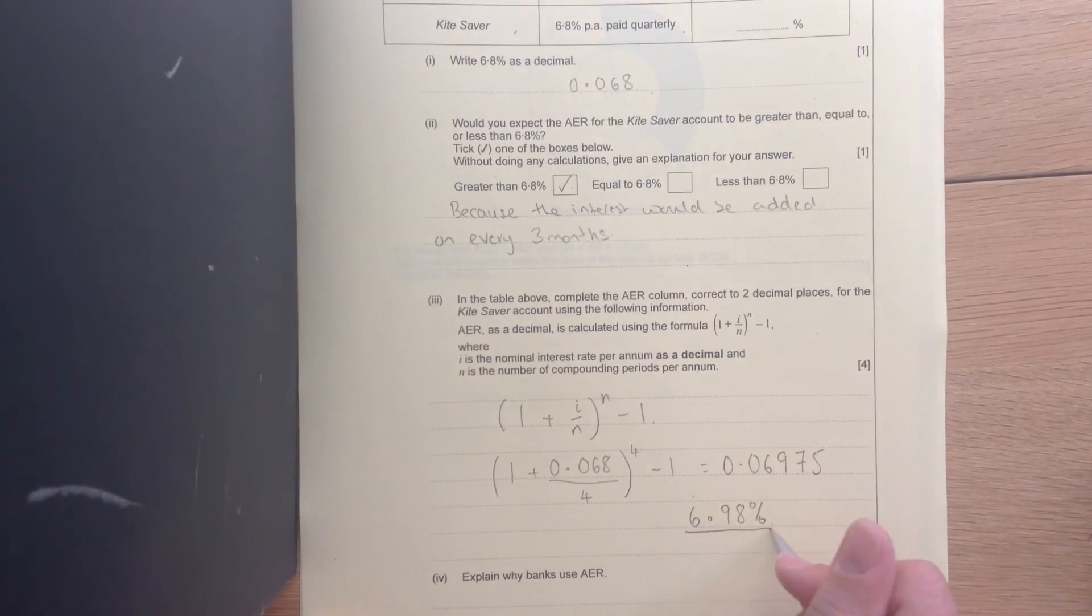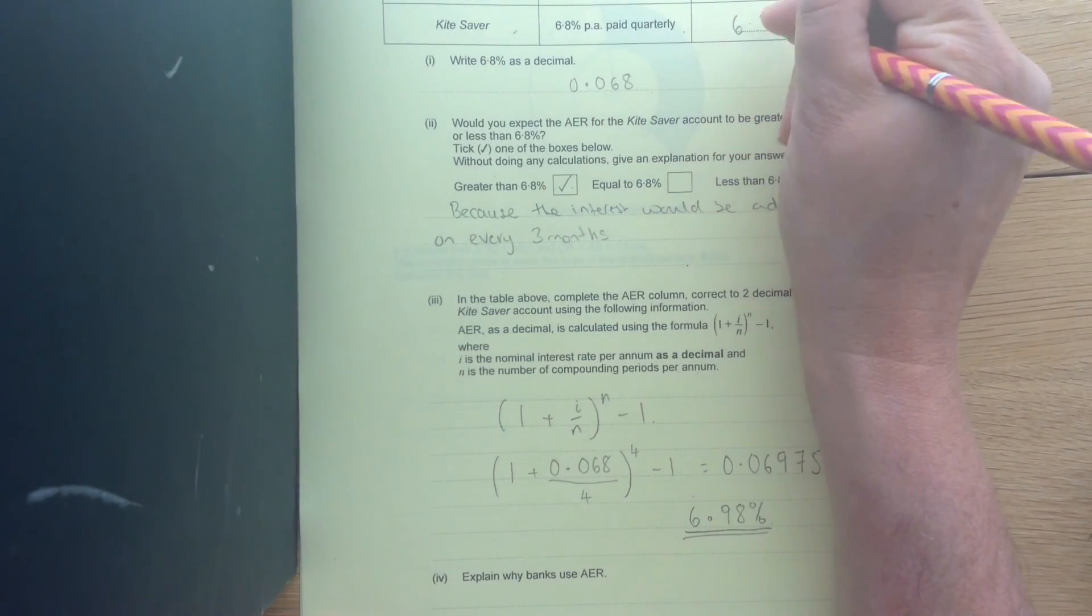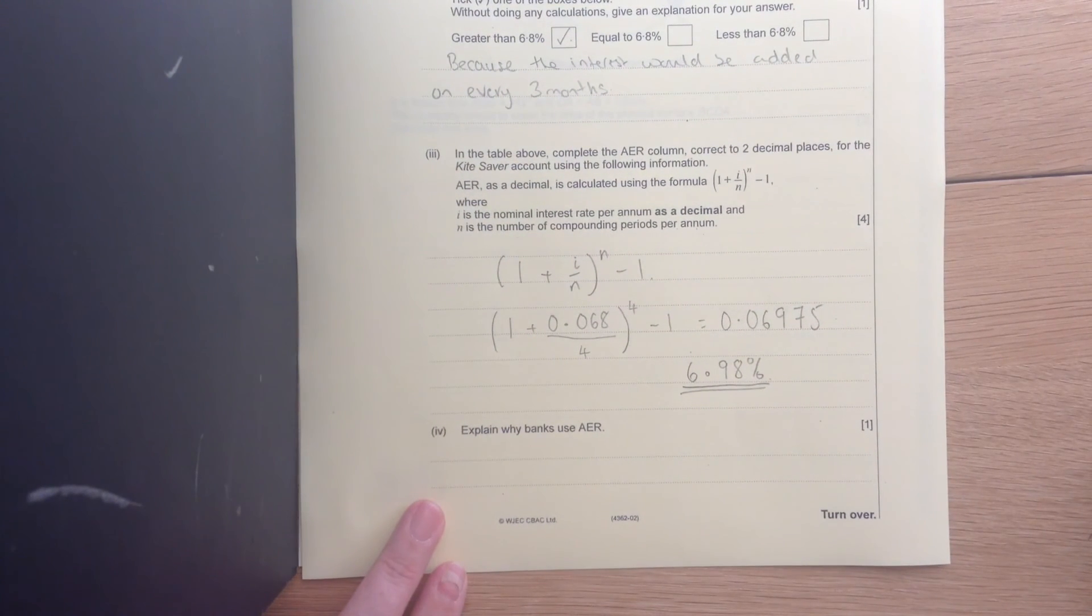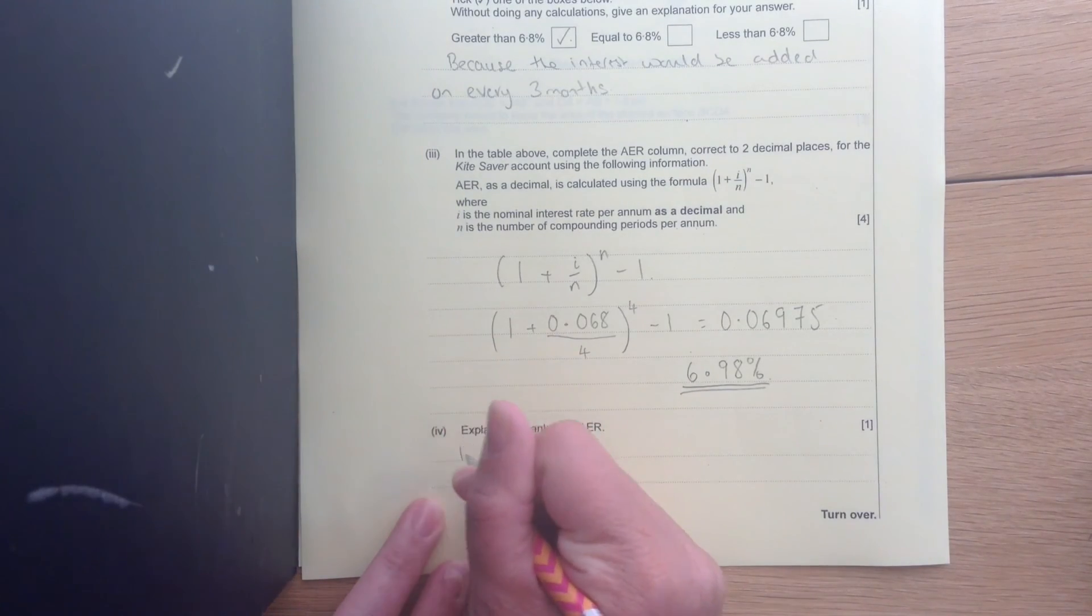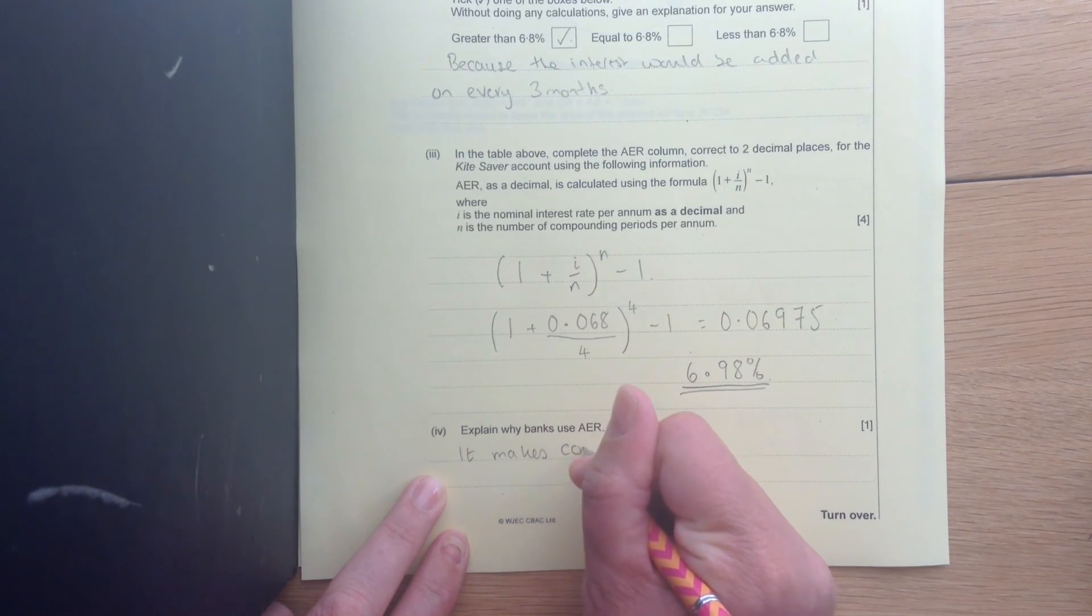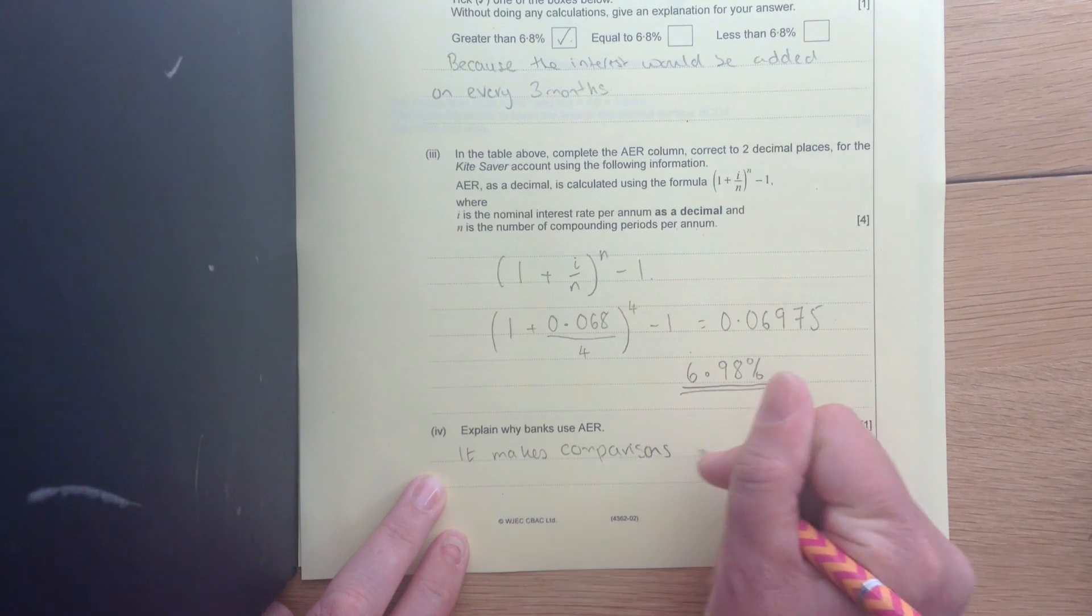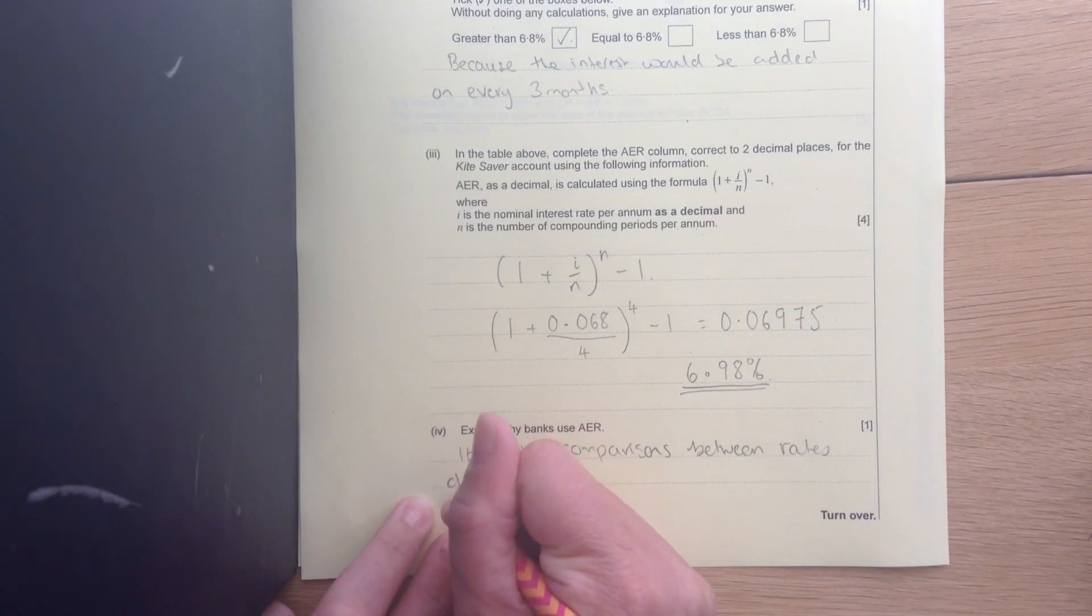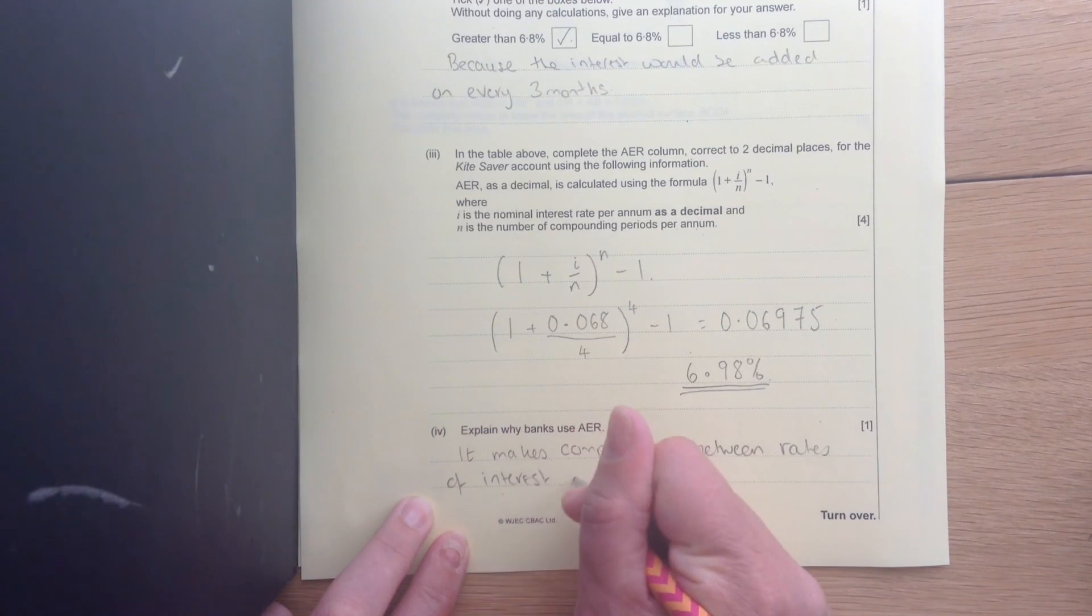So that would be the per annum rate. Explain why banks use AER. Well, they use it so that you can have a fair comparison of the interest rates. Because if they're all at different points, some are quarterly, and some are monthly, and some are annual, it's very difficult to compare them unless you've got an annual equivalent rate. So it makes the comparison fair. It makes comparisons between rates of interest fair.